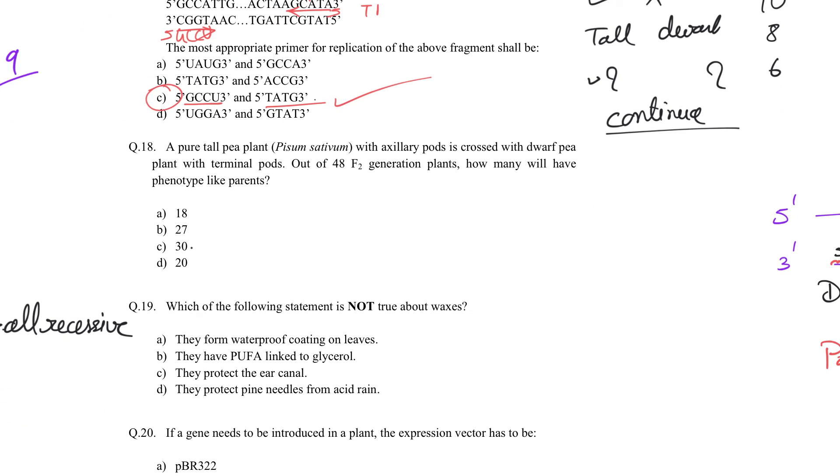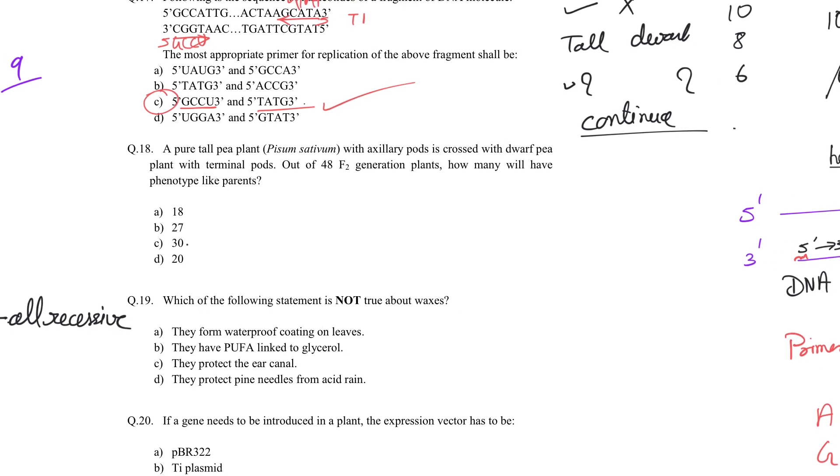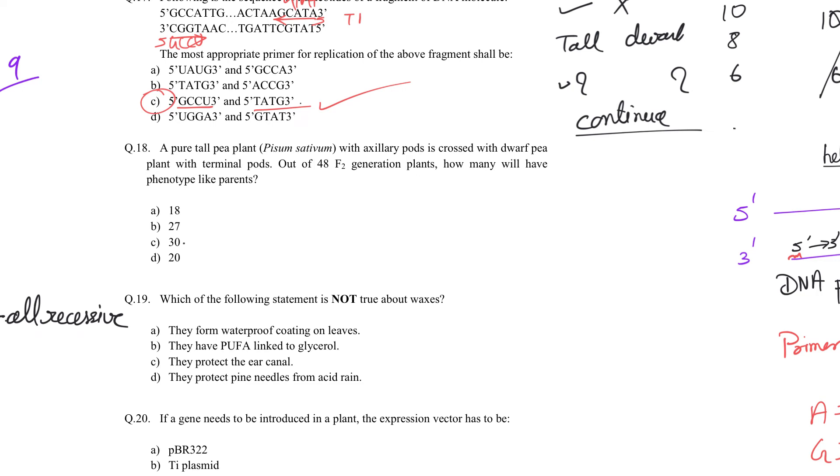Question 18: A pure tall pea plant with axillary pods is crossed with dwarf pea plants with terminal pods. Let me remind you - Mendel considered seven characters. Pod position: axillary means if these are branches, pods are here. Terminal means at the end. Axillary pods are dominant, terminal is recessive. In F2 generation out of 48, how many will have phenotype like parents? Parents in P generation: axillary crossed with terminal. F1 will be axillary because it's dominant.